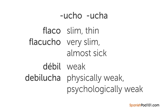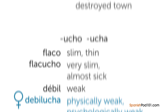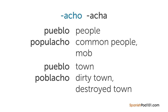A common pejorative suffix is -ucho or -ucha. From 'flaco' meaning slim or thin, we get 'flacucho' — when used pejoratively it means very slim, as in almost sick. Another example: for the adjective 'débil' meaning weak, we get 'debillucha,' used to describe a woman who is physically or psychologically weak. Another pejorative suffix can turn 'pueblo' from the Latin 'populus' meaning people into 'populacho' meaning common people or mob.